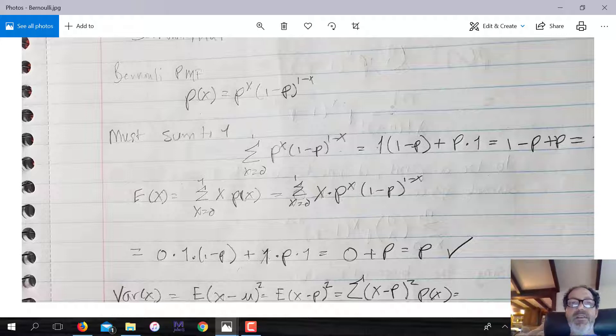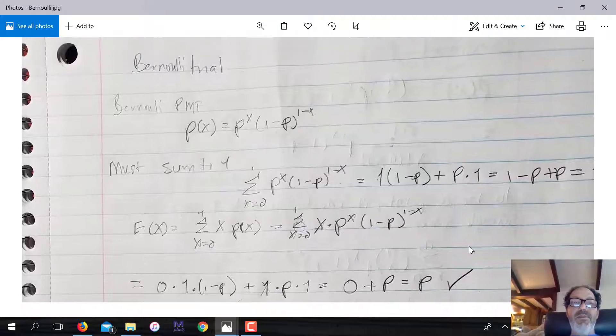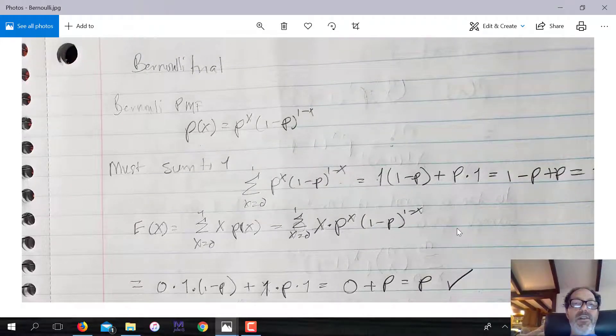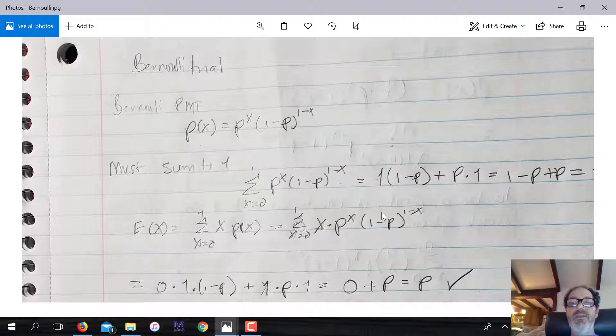So what I'm doing here is dealing with the Bernoulli random variable. A Bernoulli random variable is a variable that has only two possible outcomes. Generally, we think of them as success and failure. So in this case, success is, say, does somebody have a specific disease? One would be success, yes, and zero would be failure, no. Or a flip of a coin, if you're looking for heads or tails. That's a typical Bernoulli trial. There are only two possible outcomes.